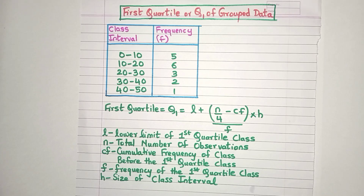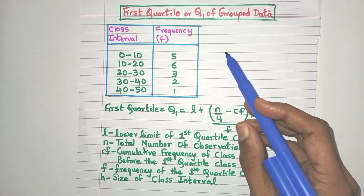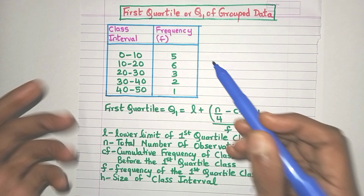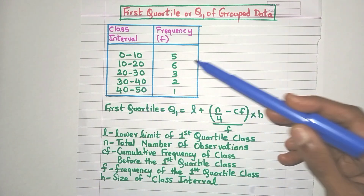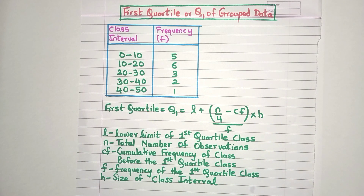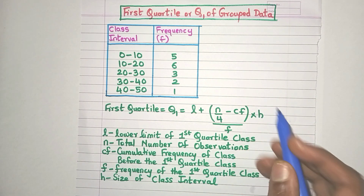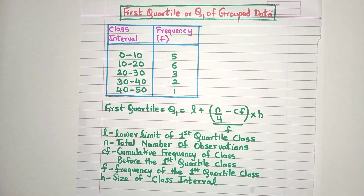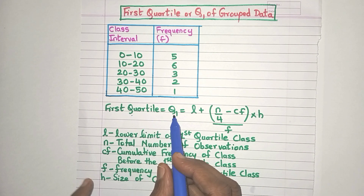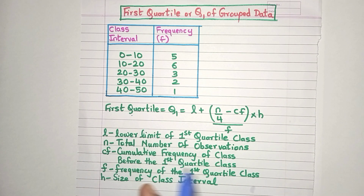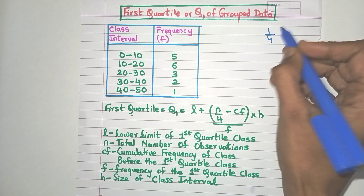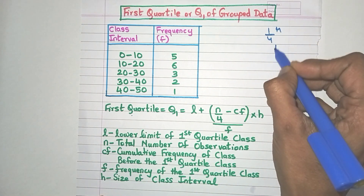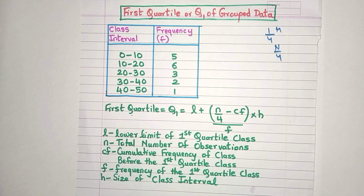Hello everyone, today let's learn how to find quartiles for grouped data. In this example we have a class interval column and a frequency column. There are three quartiles — Q1, Q2, and Q3 — for grouped data. Q1, or the first quartile, is the observation that lies at the n/4th position of the data.